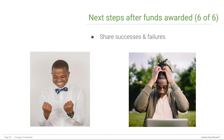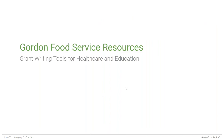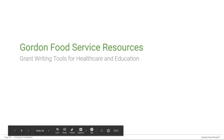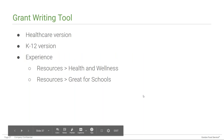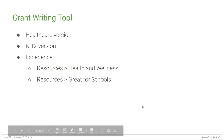That concludes Dr. Baxter's portion of the webinar. Jenny then introduced a resource from Gordon Food Service: a grant writing toolkit developed to assist in locating grants and planning and organizing the process. Both a healthcare version and a K-12 version can be found on Gordon Experience — go to Resources and then the Health and Wellness page. The K-12 version can also be found on the Great for Schools page. The format for both versions is essentially the same while providing links appropriate to each audience.